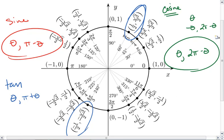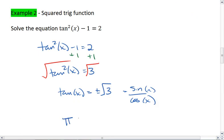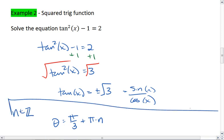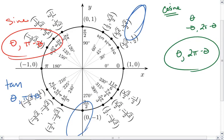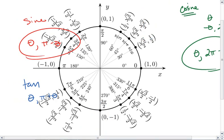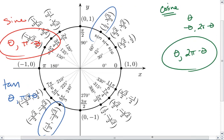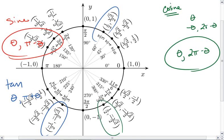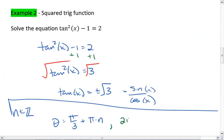In general, though, we see that it happens at pi thirds plus pi times n, for some n is an integer. But remember, our other solution is a negative root 3. Our negative root 3 is going to happen at, let's see, here we go, 2 pi over 3. So we also get theta is 2 pi over 3 plus pi times n. There's your solutions for tangent.